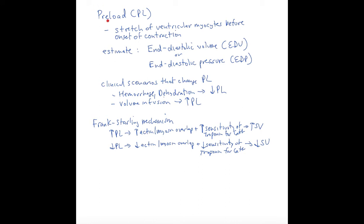The way we would estimate preload would be things that tell us about stretch. At the end of filling, that's the maximum volume that the ventricle has. The end-diastolic volume would give us some idea about the degree of stretch, and similarly, the end-diastolic pressure, as volume and pressure are related.